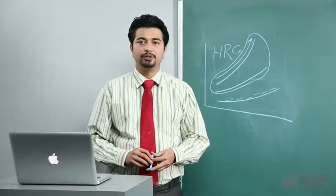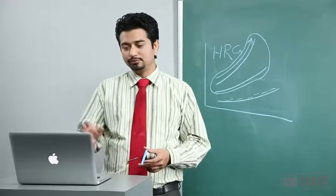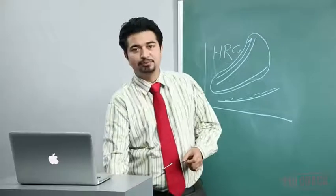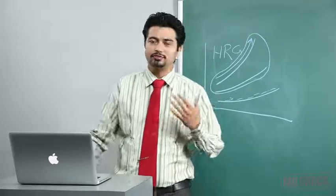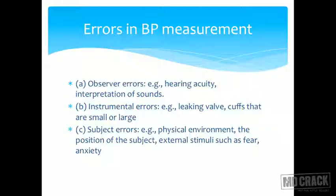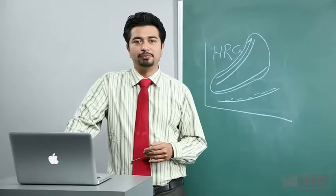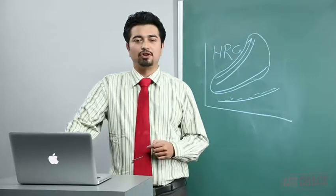Errors in blood pressure measurement: measurement of blood pressure is a classical example of many potential errors. First is observer error — hearing acuity, classification of sounds, and interpretation of sounds vary from person to person, which can be a big problem. If three or four people take blood pressure, everybody's value will be different. This is observer variation.